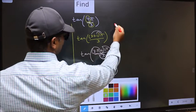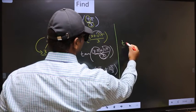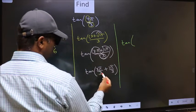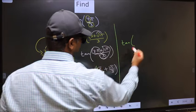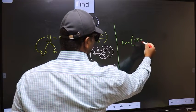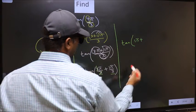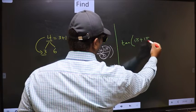Next, tan. Now here we should cancel 3 and 3. We get 1π plus, this no change, 1π/3.